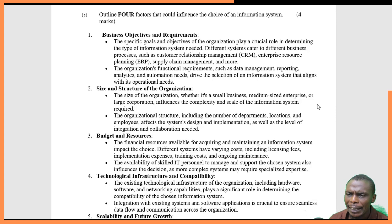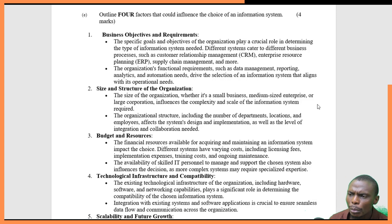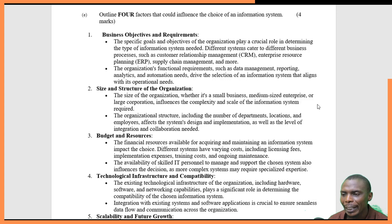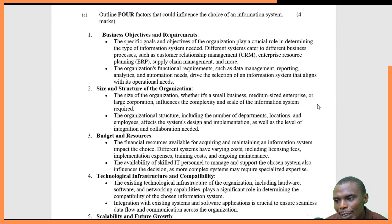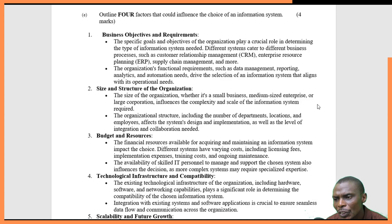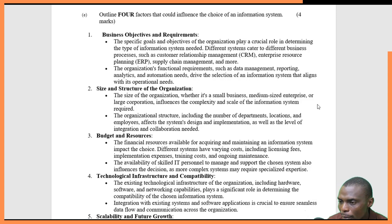The second factor is the size and structure of the organization. The size of the organization matters because it could be small, medium-sized, or a very large corporation. A very large corporation will need a complex system that is highly scalable, while a small organization could just need an information system with very few functionalities. The third factor is budget and resources. The financial resources available will determine the type of information system, because different systems have different costs — licensing fees, implementation fees, training costs, and even skilled IT personnel to support and manage the system.